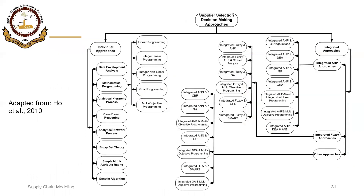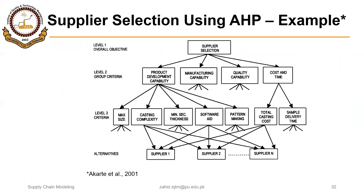There are a large number of methods that can be used to select suppliers. This is a list from a study performed in 2010 — a long list, of course. We will briefly see two methods: analytic hierarchy process and the weighted point method.